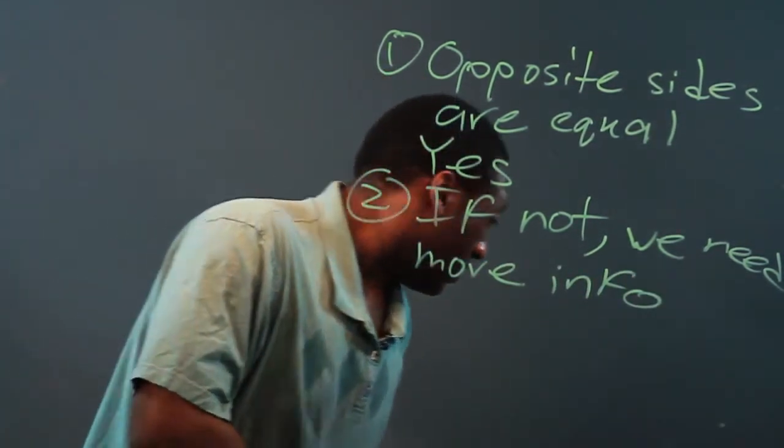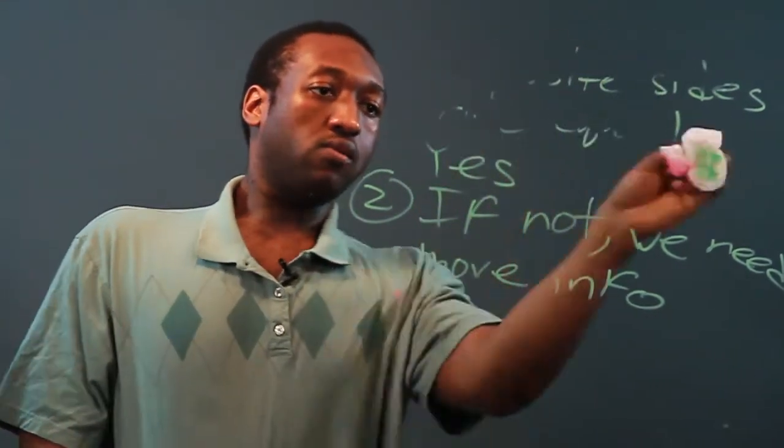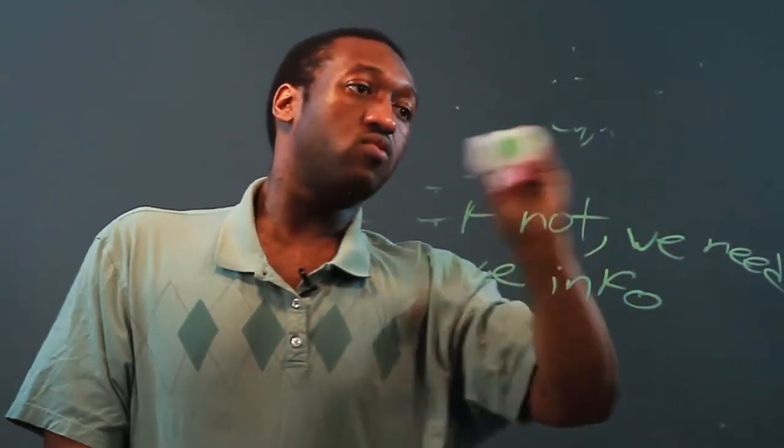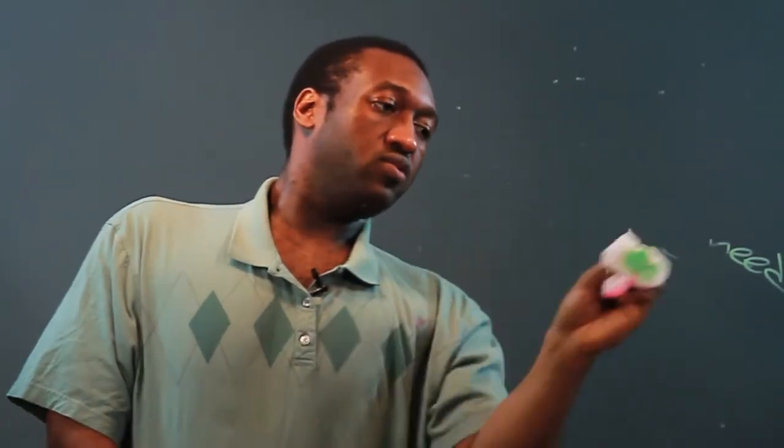So let's look at a shape where the opposite sides are equal. Let's say we look at a rectangle. Now for a rectangle, we only need two lengths because the opposite sides are equal.